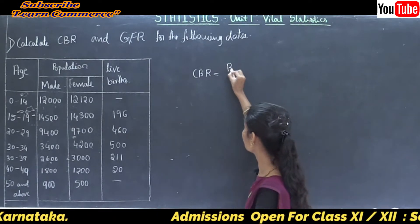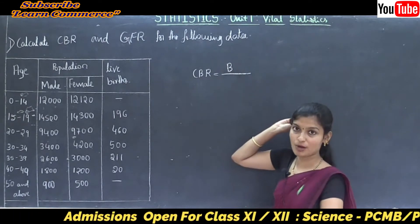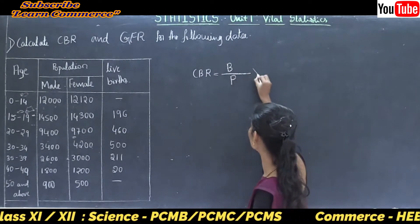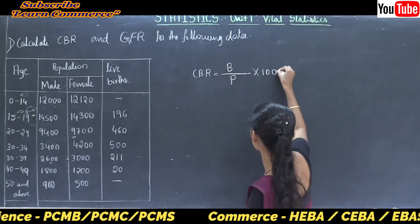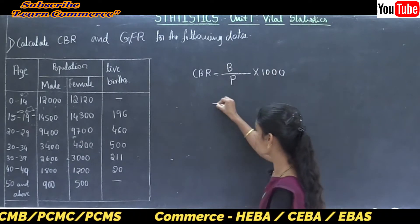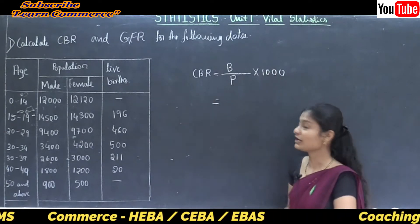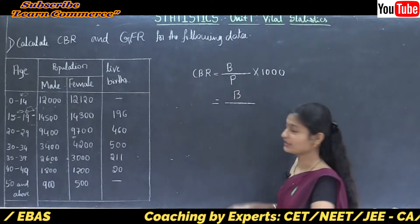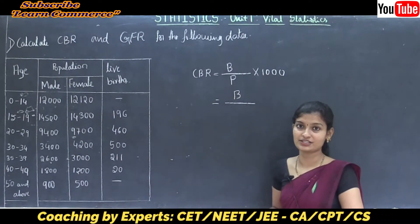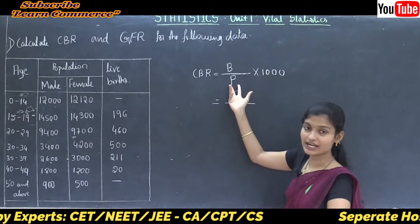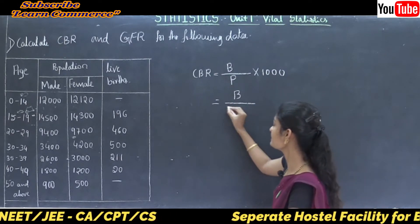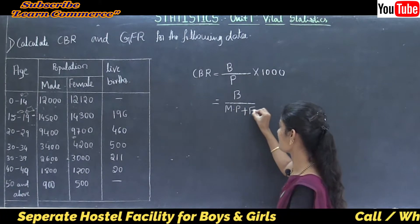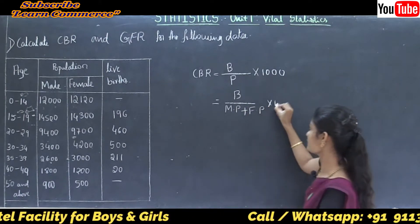That is denoted by B, divided by total population in the year. Here population is denoted by P, into 1000. Based on our observation, here live births are given. So that is B divided by population. Here male and female populations are given, so I will write population as male population plus female population, into 1000.